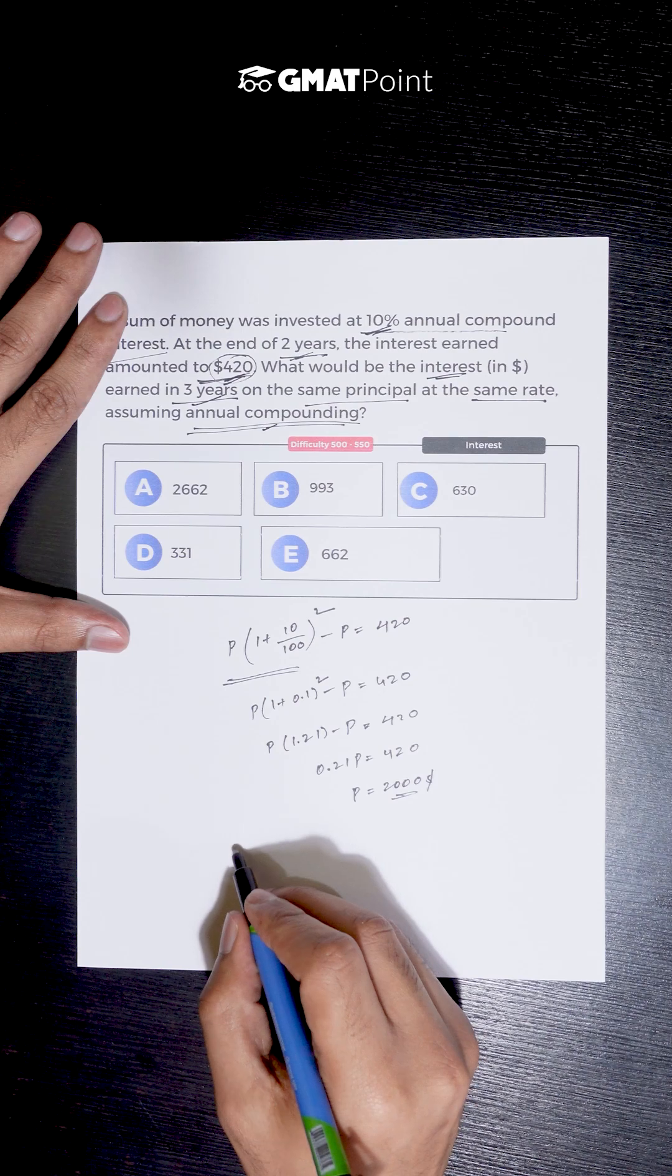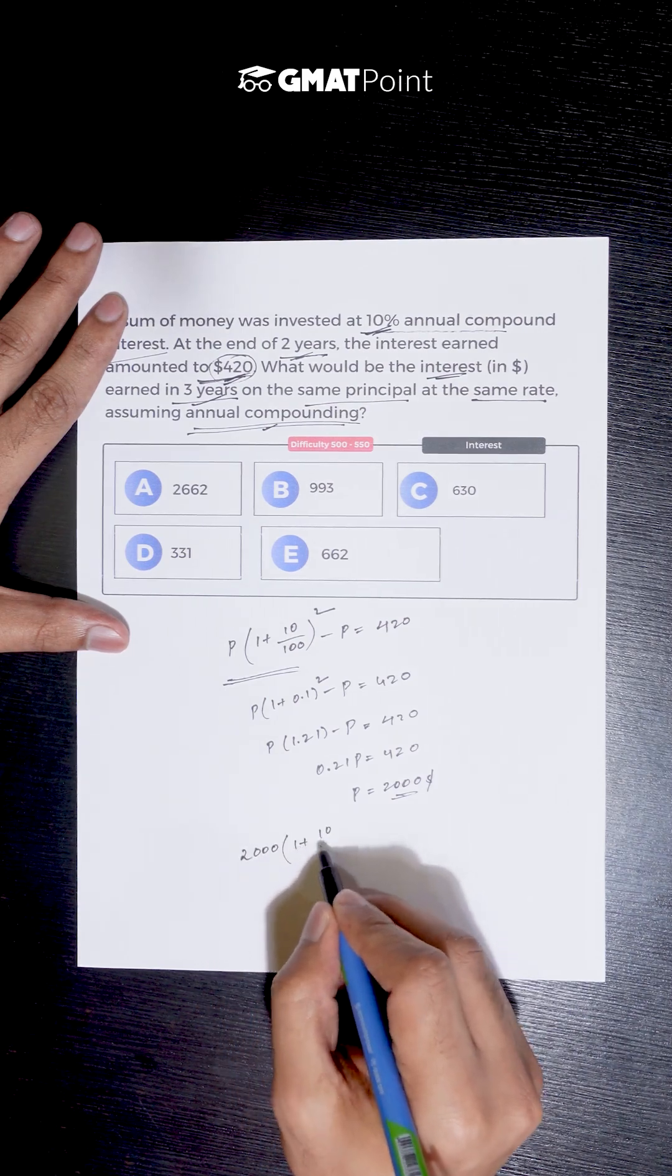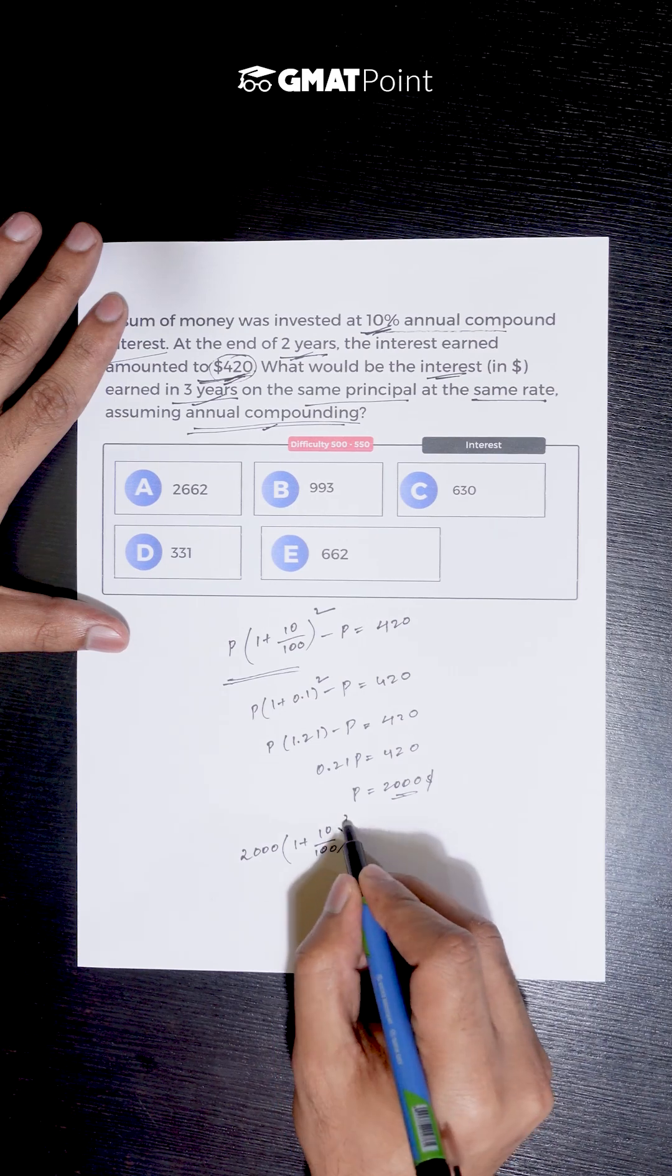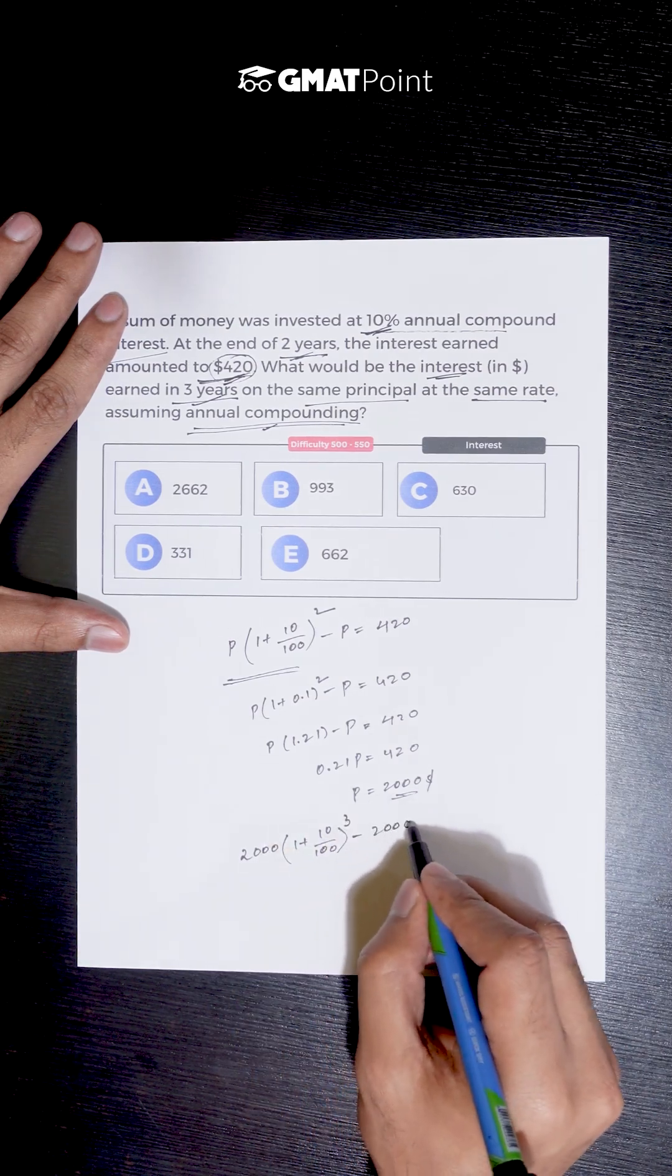So the interest after three years can be calculated as P into (1 plus R by 100) whole to the power of N minus P, which is 2000.